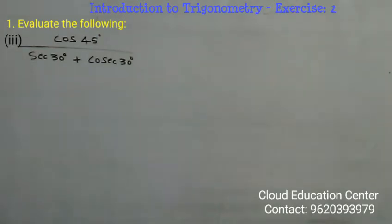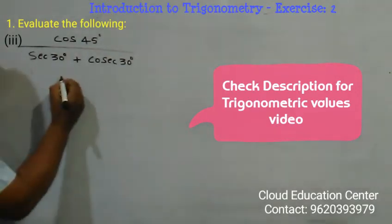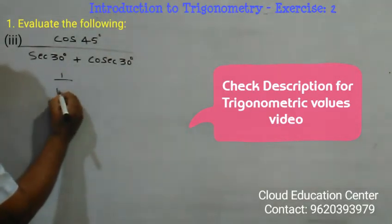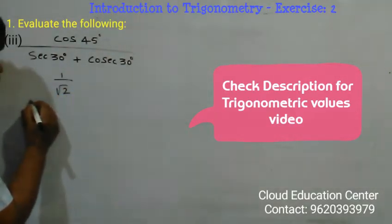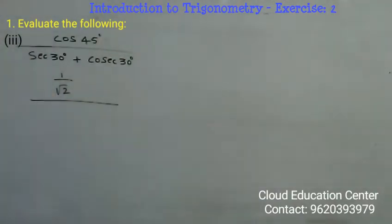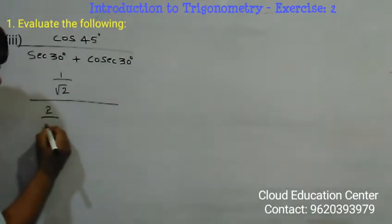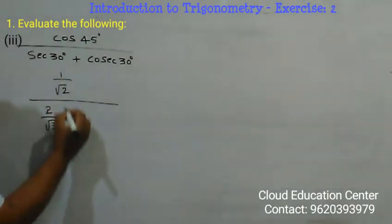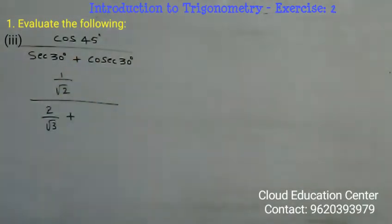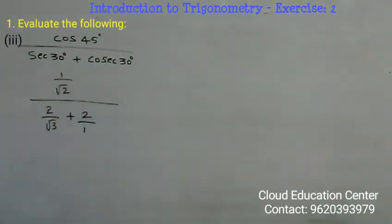First of all, you know the values: cos 45 degree is nothing but 1 by root 2, divided by secant 30 which is nothing but 2 by root 3, plus cosecant 30 which is nothing but 2, and you can write 2 as 2 by 1 also.